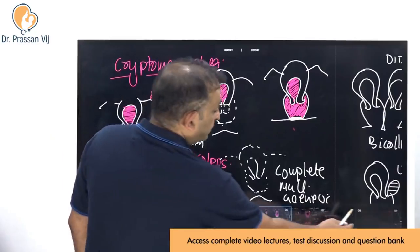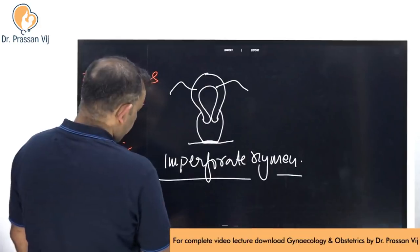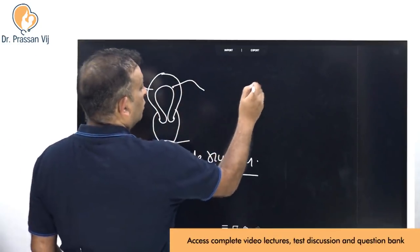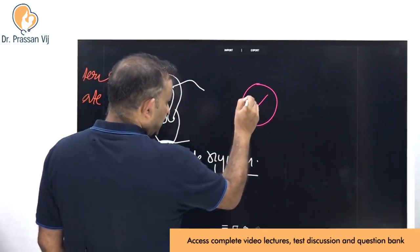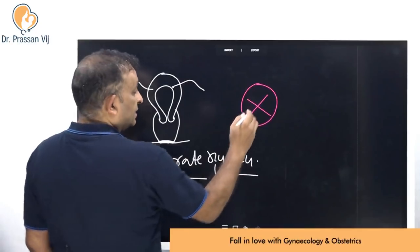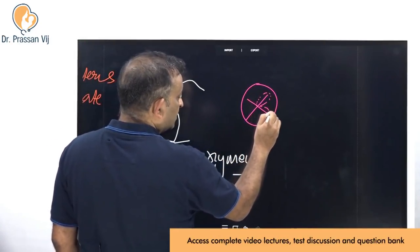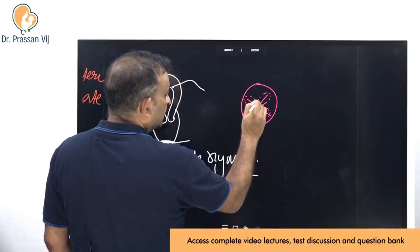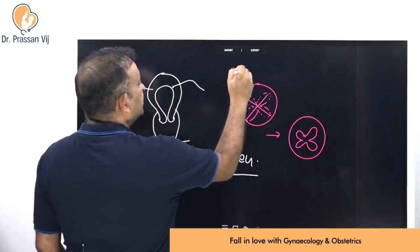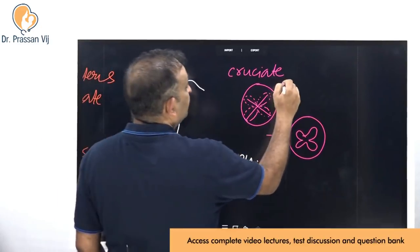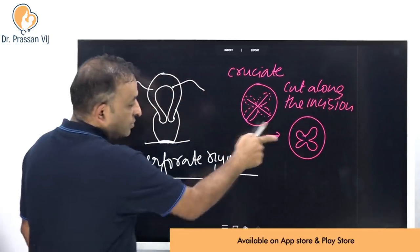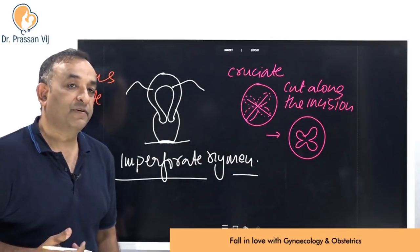Treatment of imperforate hymen: with the patient in the supine position, a cruciate incision is made on the hymen under anesthesia, allowing the pent-up menstrual blood to drain. Since this incision can close very quickly, the edges are cut along the incision lines so the hymenal opening remains open — giving it a cruciate shape.